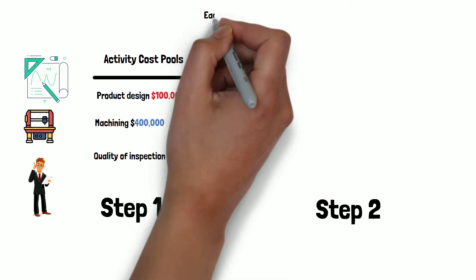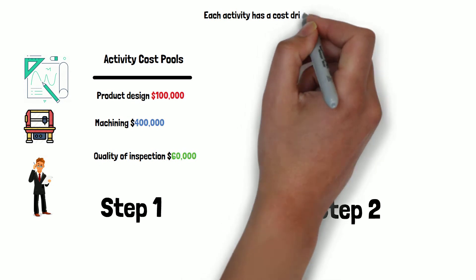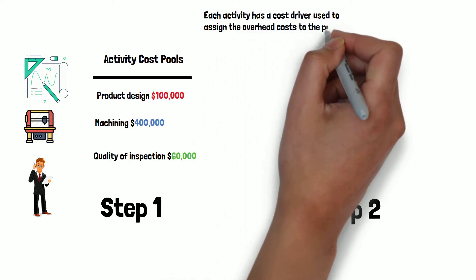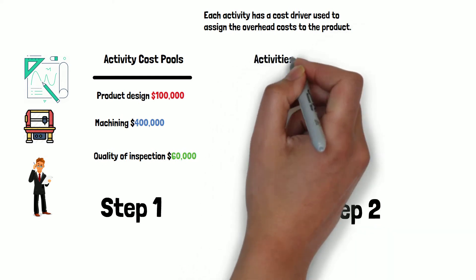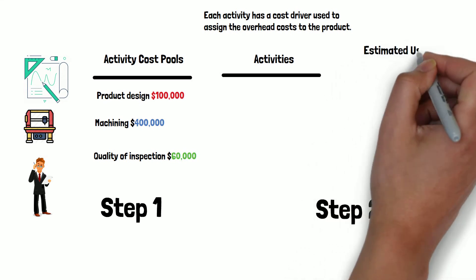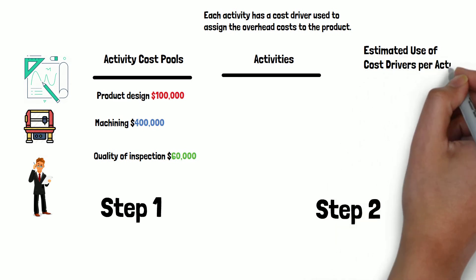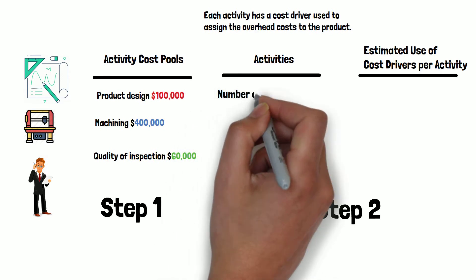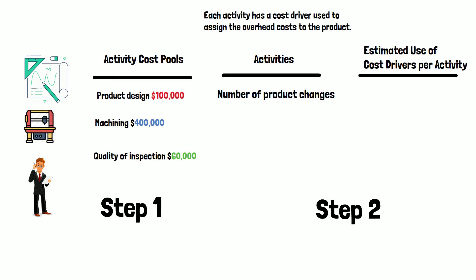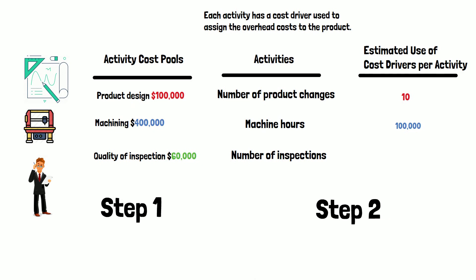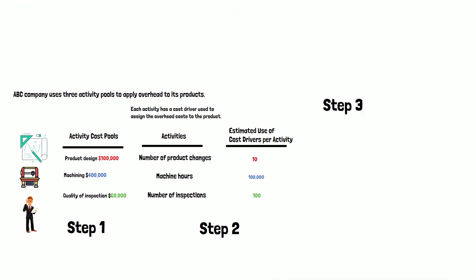Step two: each activity has a cost driver used to assign the overhead cost to the product. We want to know what the activities are for each cost pool and the estimated usage of the cost driver. For product design, the cost driver is the number of product changes — we assume 10 product changes. For machining, machine hours is the cost driver — we assume 100,000 machine hours. The number of inspections is the cost driver for inspection — we assume 100 inspections.